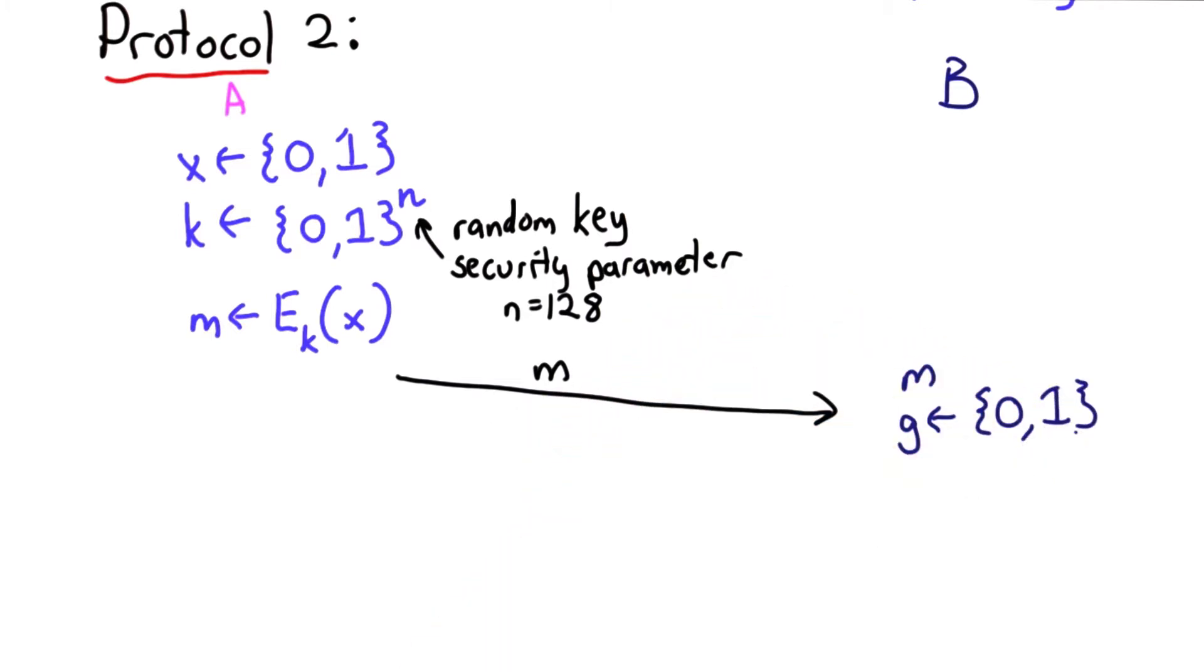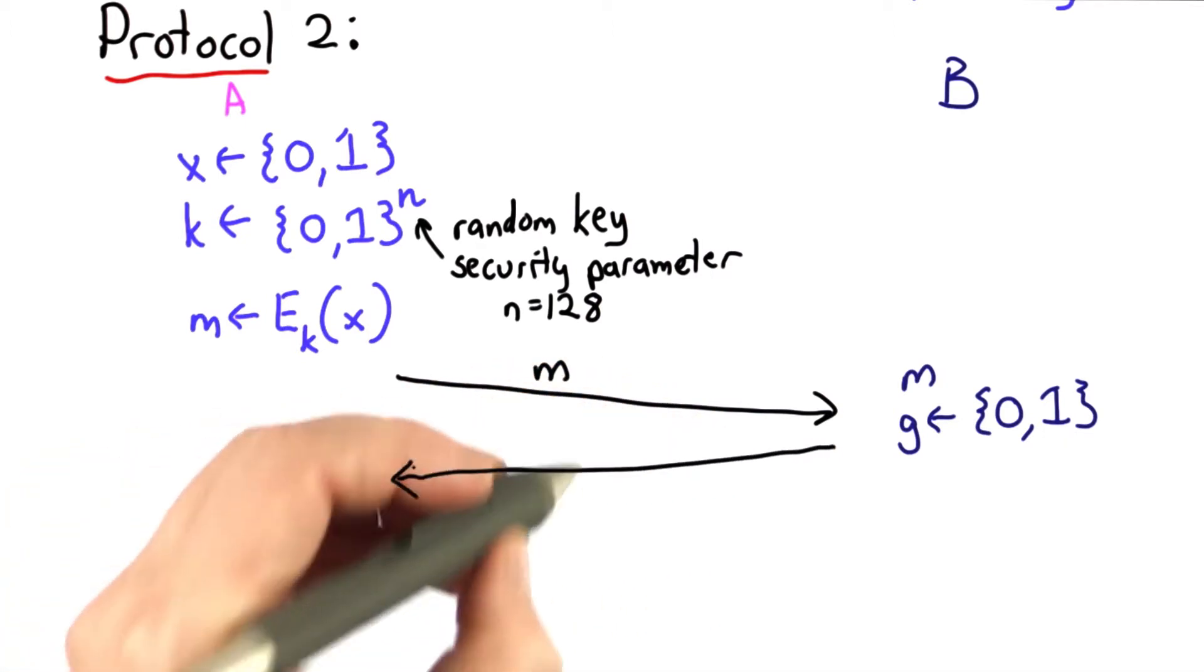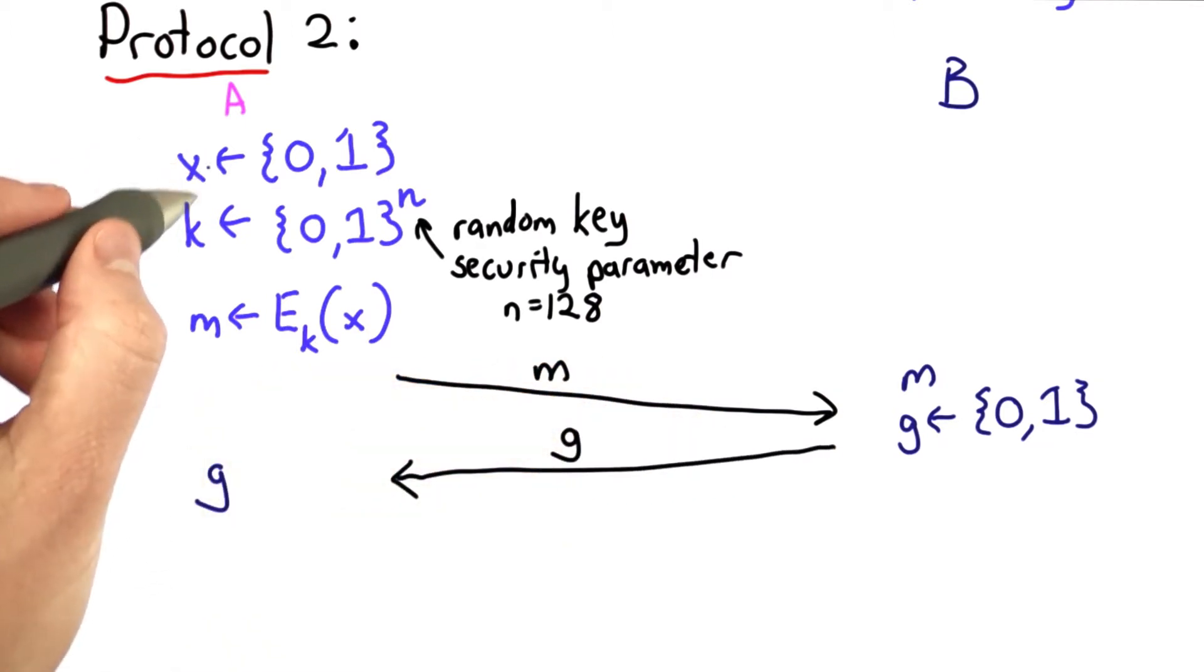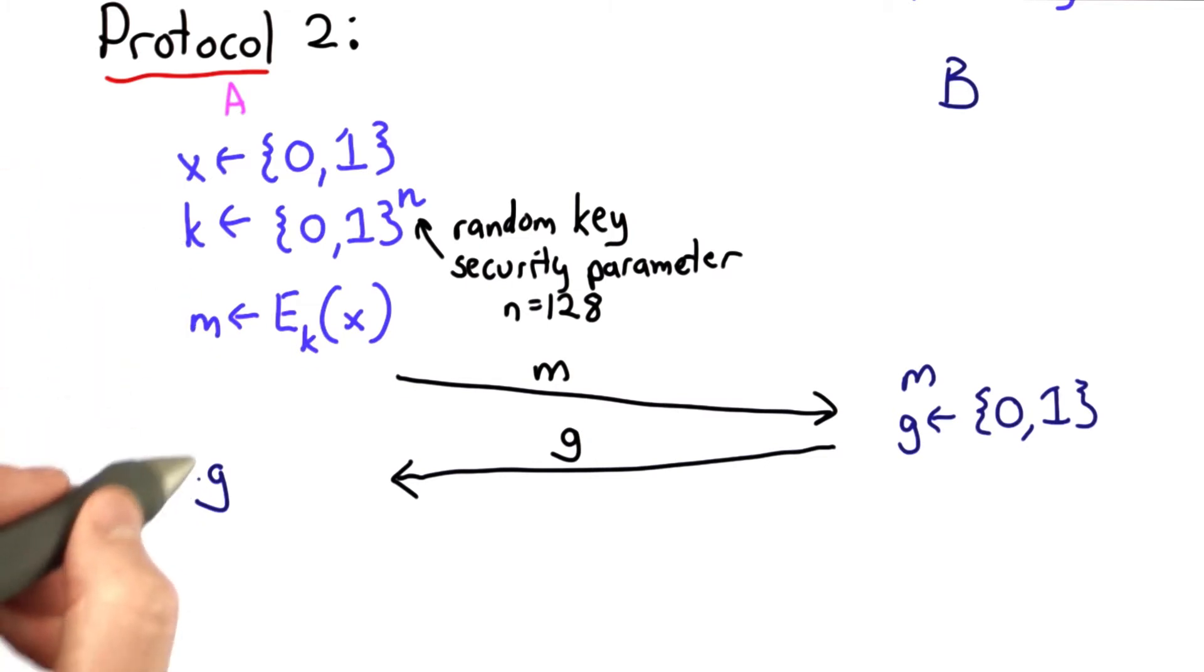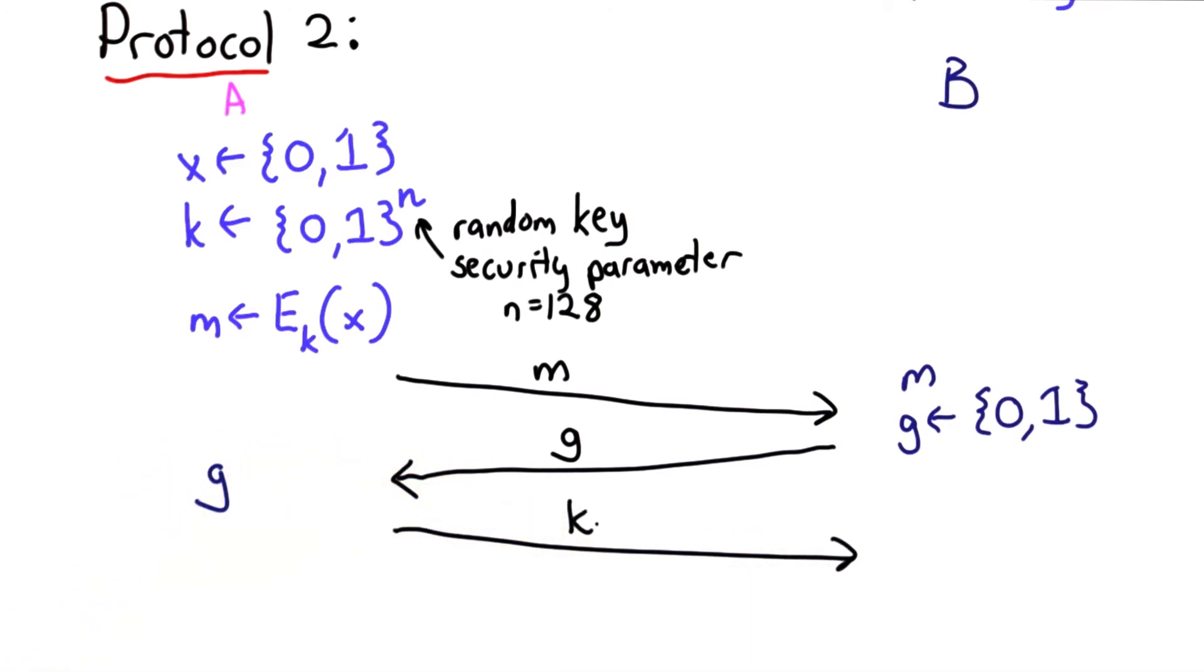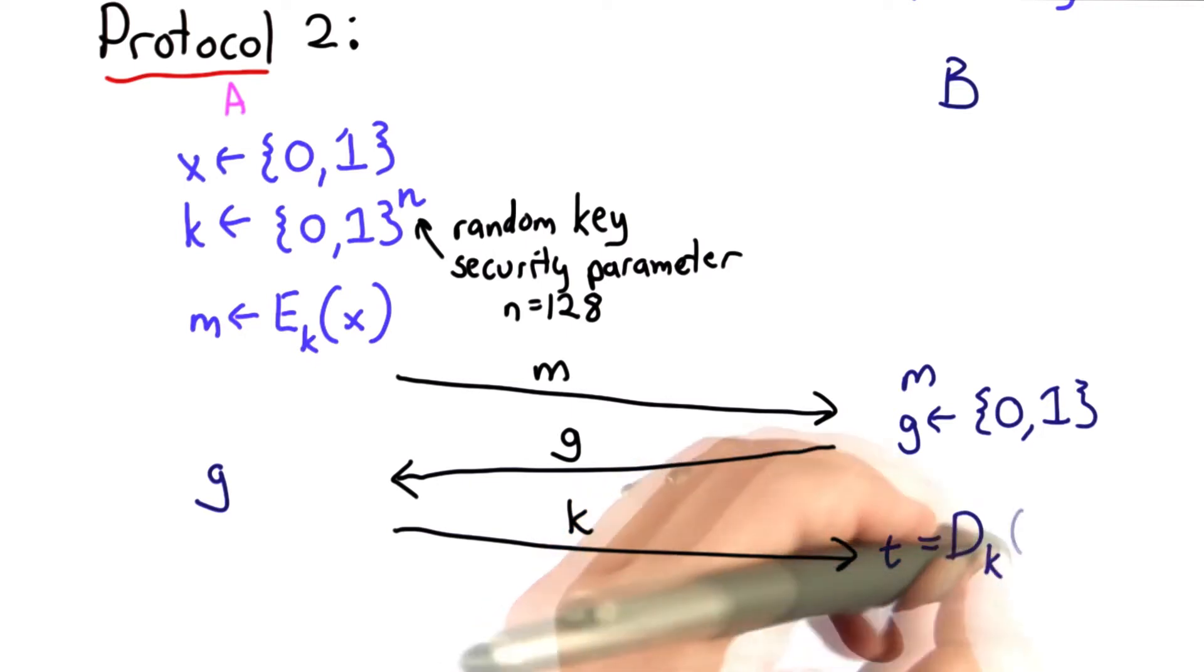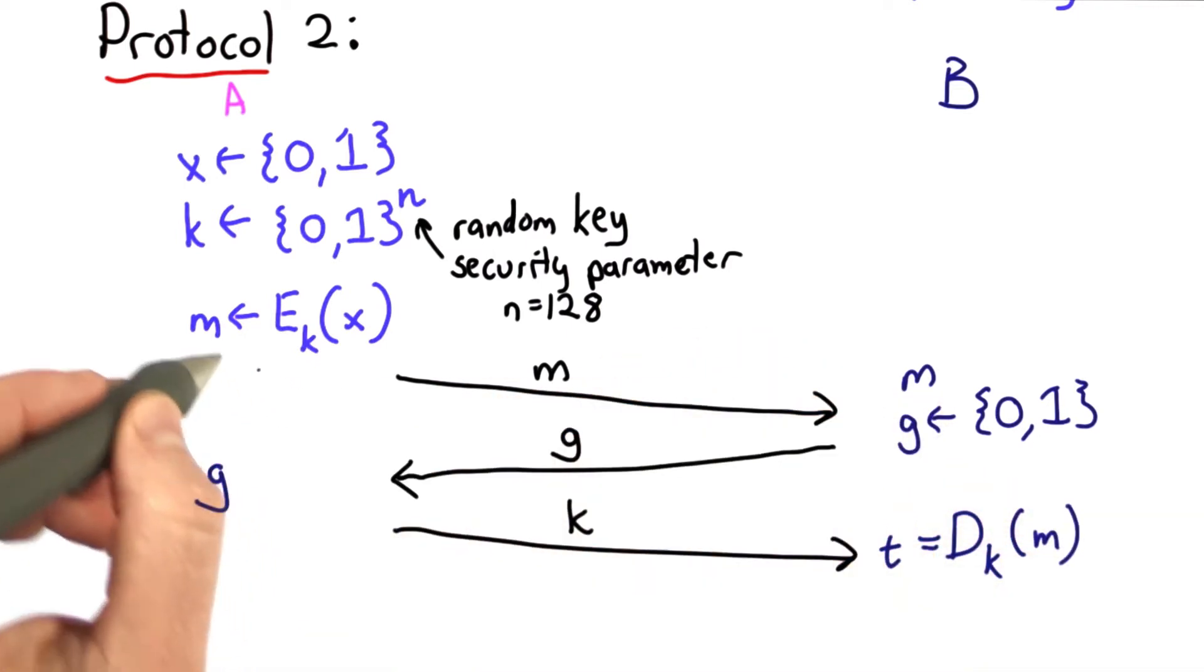That's like calling the coin toss. Bob will send that guess back to Alice. Alice knows the values she picked for x, k, and m, as well as the value Bob picked for the guess. At this point, Alice sends the key to Bob, and Bob can compute the result of decrypting the message with the key. This is the message that Alice sent to Bob in step 1.